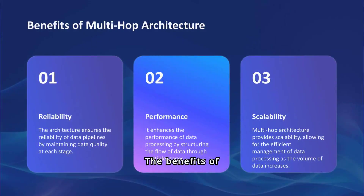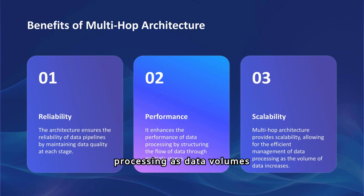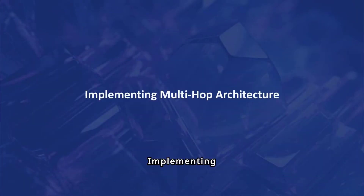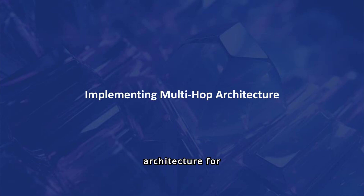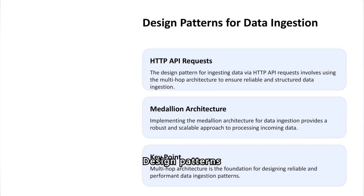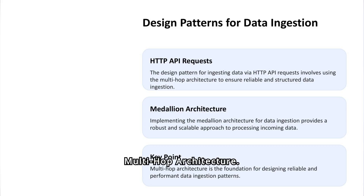The benefits of MultiHop Architecture include enhanced reliability, performance and scalability, ensuring efficient data processing as data volumes increase. Implementing MultiHop Architecture involves understanding design patterns for data ingestion and leveraging the Medallion Architecture for robust data processing. Design patterns like HTTP API requests and Medallion Architecture are foundational for reliable and structured data ingestion.